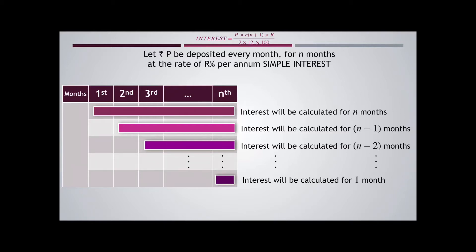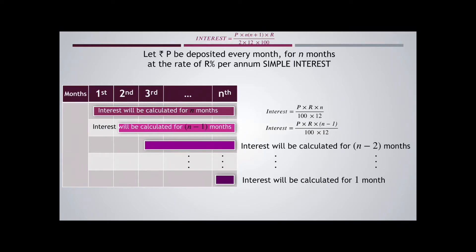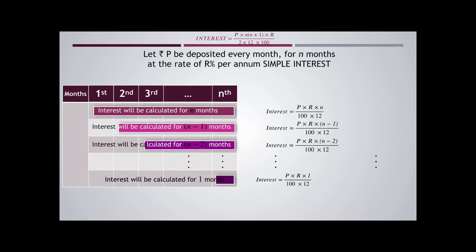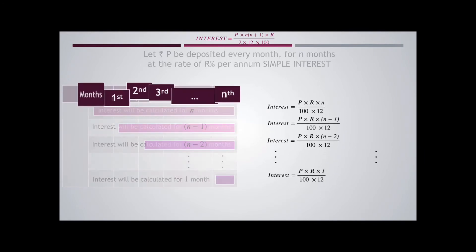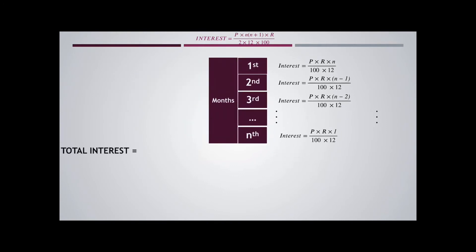Using the formula for simple interest, for the first month, interest will be P × R × N / (100 × 12). Similarly, for the second month, interest will be P × R × (N-1) / (100 × 12). For the third month, interest will be P × R × (N-2) / (100 × 12). And for the last month, interest will be P × R × 1 / (100 × 12).